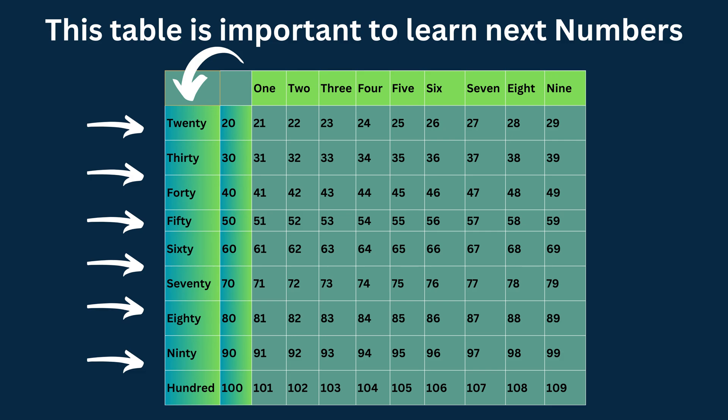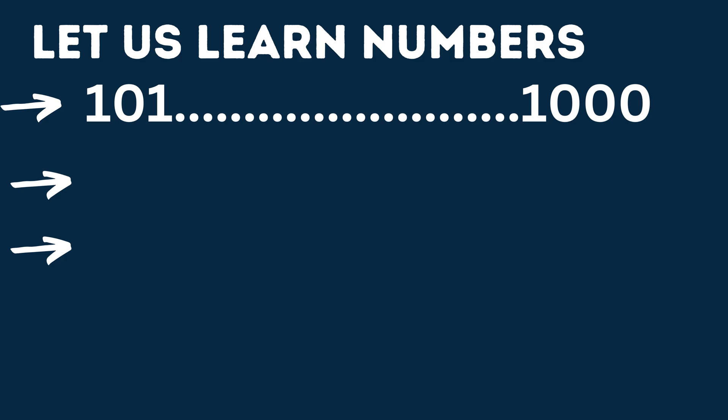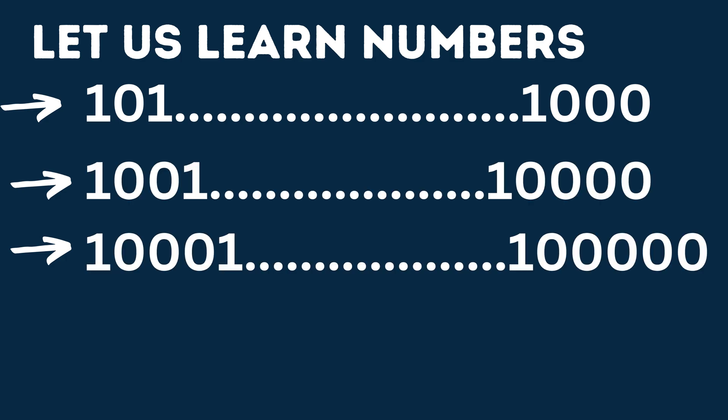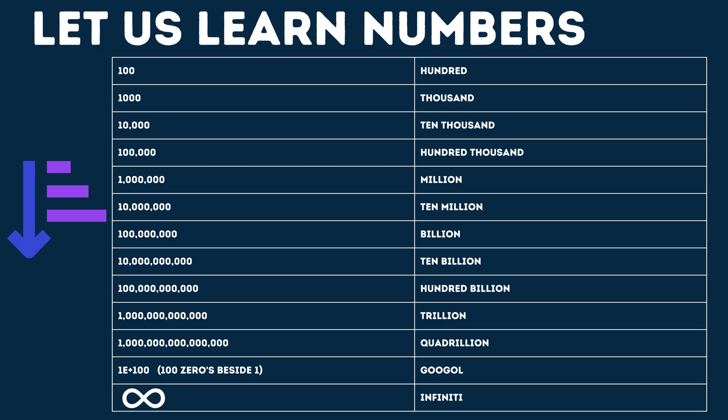Let us learn the ordering of numbers. After 100, the next numbers will be 101, 102, 103 and so on till 1000. Next will be 1001 and so on till 10,000. The next big number is 100,000. Then million, 10 million, and next is billion.